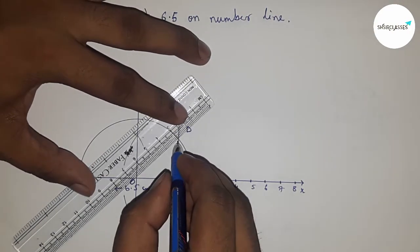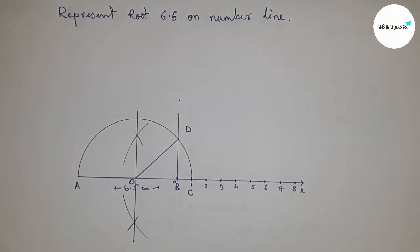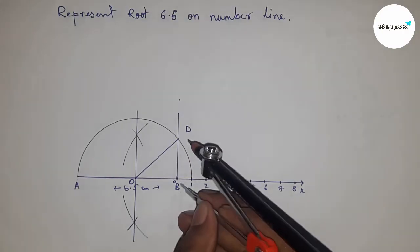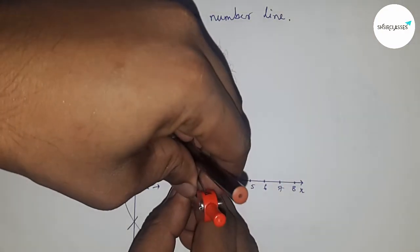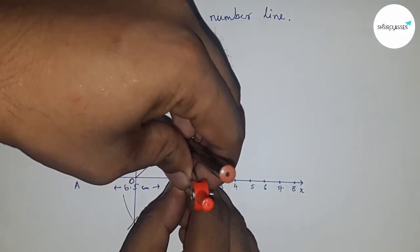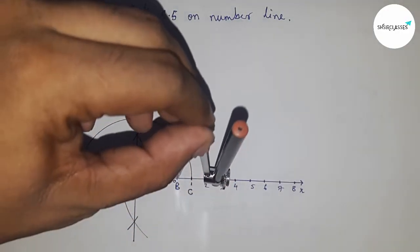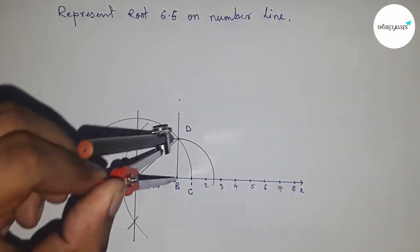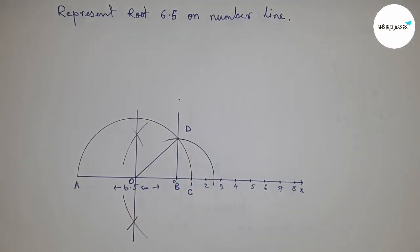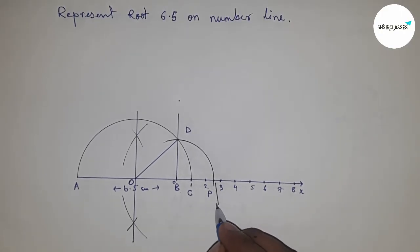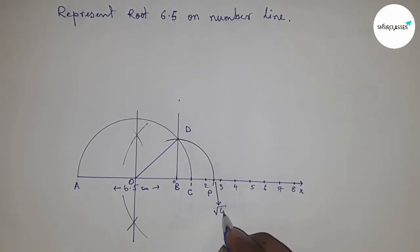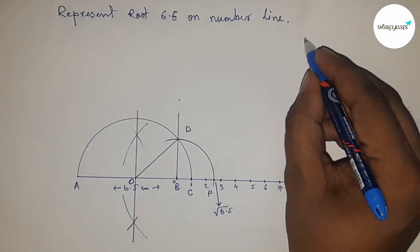Join B and O, D and O. Next, take the distance BD by compass and draw an arc which cuts the number line at a point. This is the representation of root 6.5. Next, let's roughly discuss the calculation of root 6.5.